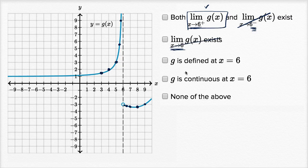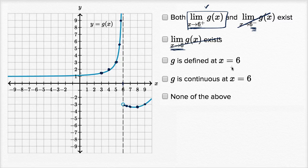G is defined at x equals six. At x equals six, it doesn't look like g is defined. Looking at this graph, I can't tell you what g of six should be. We have an open circle over here, so g of six is not equal to negative three, and this goes up to infinity — we have a vertical asymptote drawn right over here at x equals six. So g is not defined at x equals six.